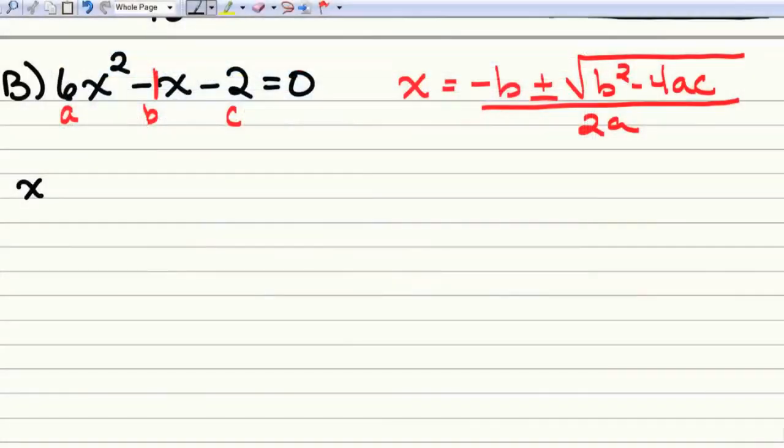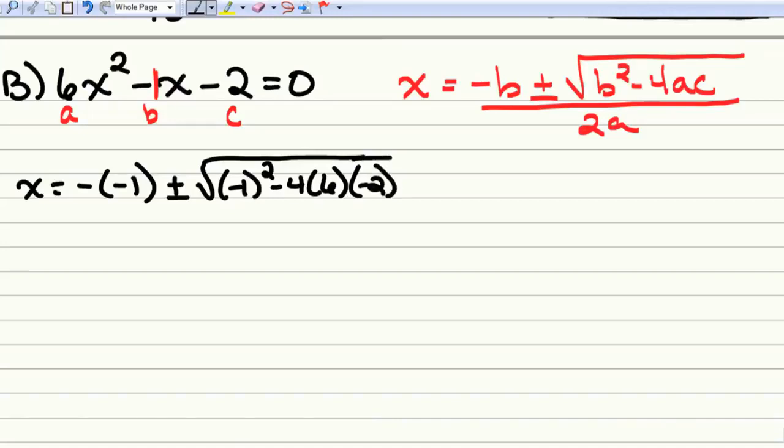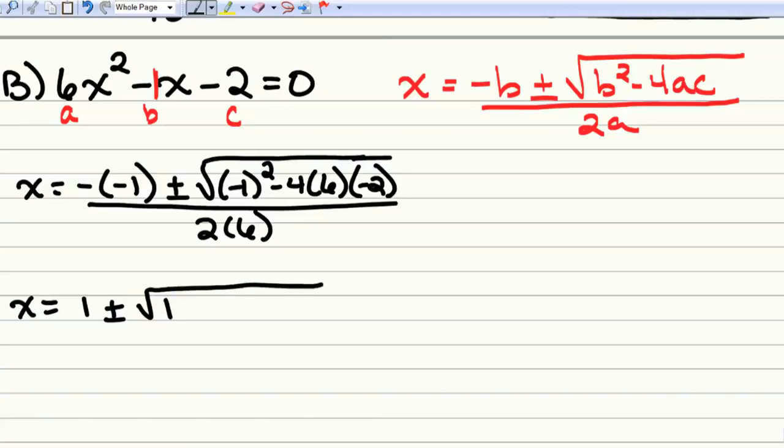And now we plug it in. So X equals the opposite of B, plus or minus square root, B squared minus 4, A, C, all over 2, A. So now let's reduce. The opposite of negative 1 is 1, plus or minus the square root of negative 1 squared is 1. Negative 4 times 6, negative 24. Negative 24 times negative 2 is a positive 48. So double check your signs. That gives us X equals 1 plus or minus the square root of 49 over 12.